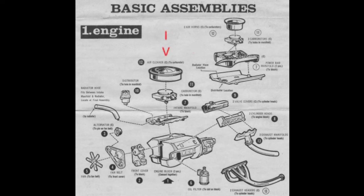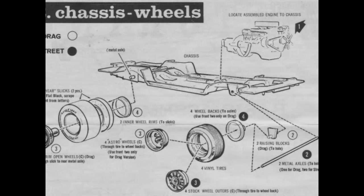The factory stock option included a standard air cleaner mounted on a Holley 4-barrel carb. The car rolled on factory stock GT Rally wheels mounted on period-correct vinyl Goodyear polyglass GT tires.